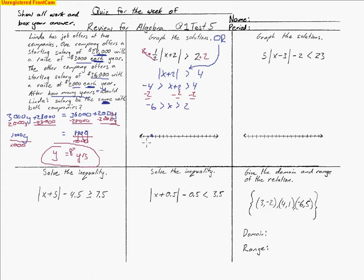Placing negative 6 on the number line with an open circle, and 2 with an open circle as well. Since x is greater than 2, we shade to the right; since x is less than negative 6, we shade to the left. Written as an or statement: x is less than negative 6 or x is greater than 2. The graph of the solution is what you get graded on.